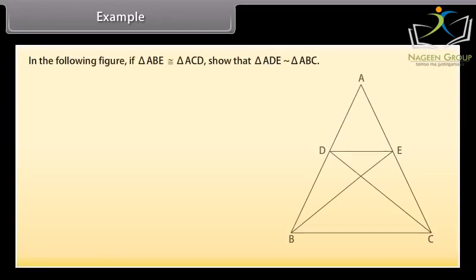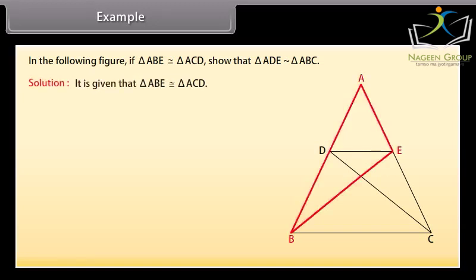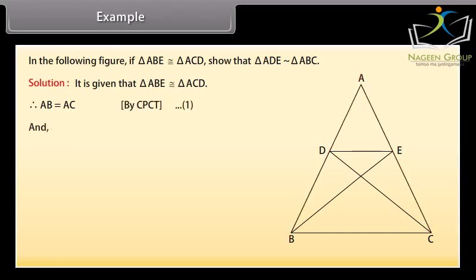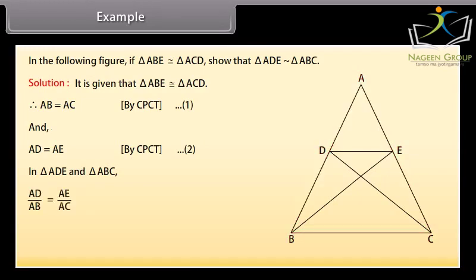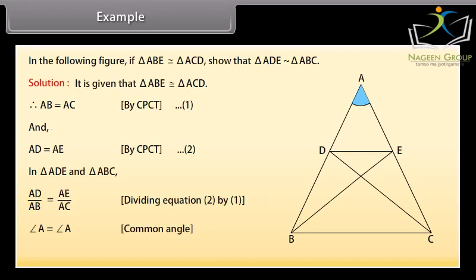In the following figure, if triangle ABE is congruent to triangle ACD, show that triangle ADE is similar to triangle ABC. Solution: Since triangle ABE is congruent to triangle ACD, AB equals AC by CPCT — mark it as equation 1 — and AD equals AE by CPCT — mark it as equation 2. In triangles ADE and ABC, AD upon AB equals AE upon AC (dividing equation 2 by equation 1), and angle A equals angle A (common angle). Therefore, triangle ADE is similar to triangle ABC by SAS similarity criterion.